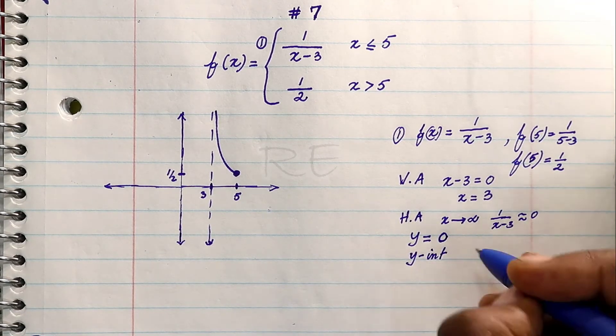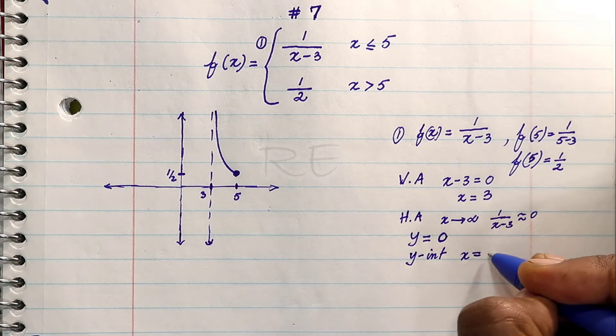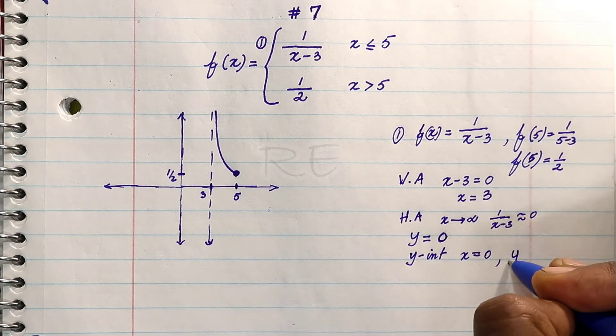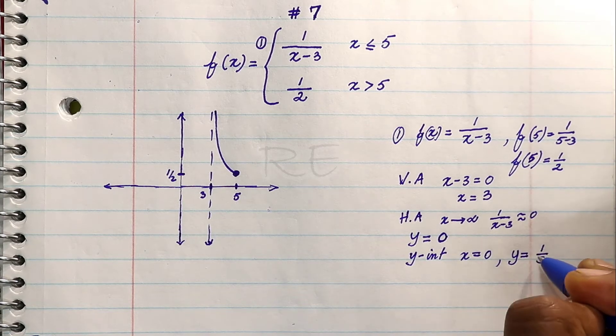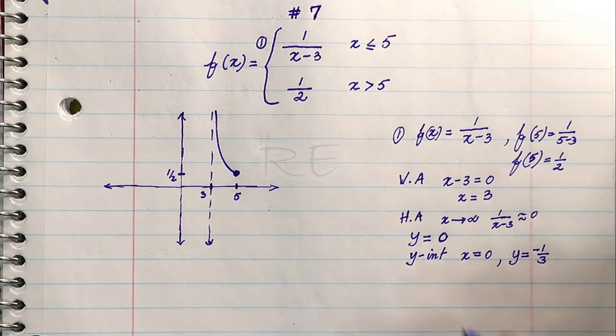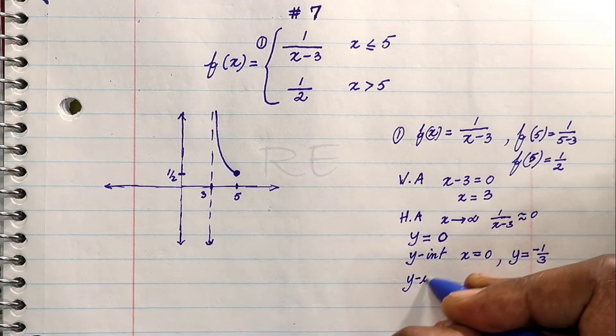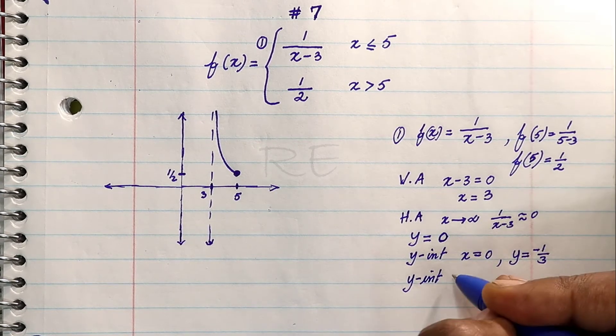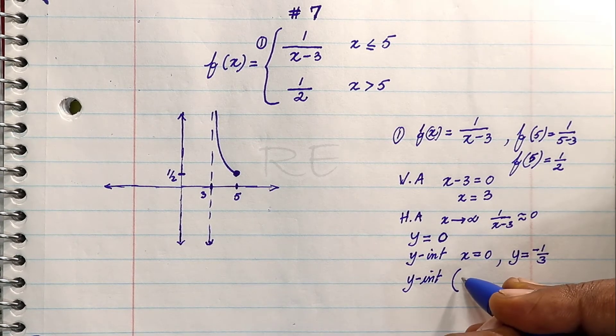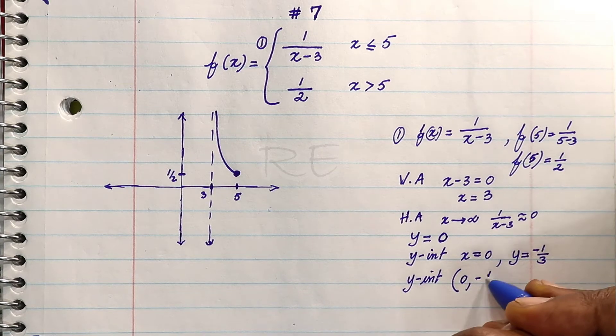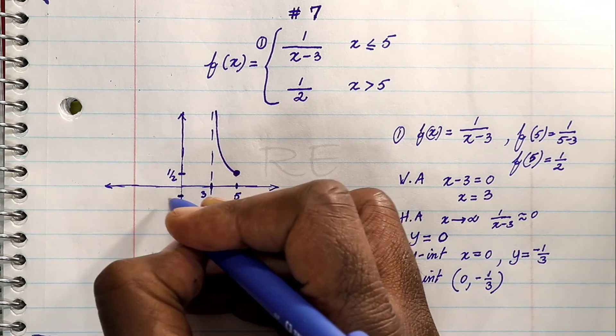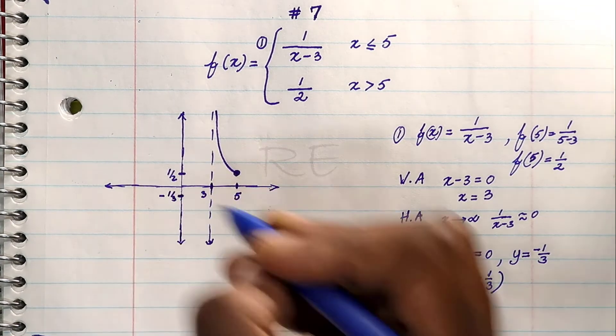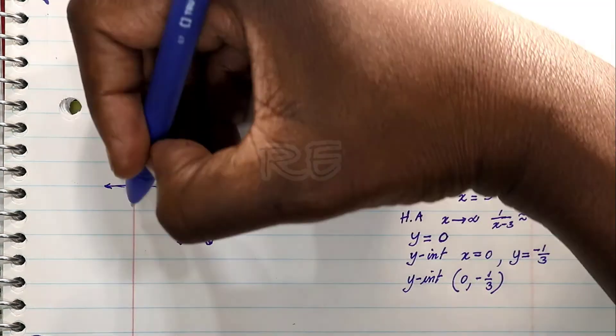For the y-intercept, x equals 0, y equals 1 over 0 minus 3, which is 1 over negative 3. So the y-intercept is (0, negative 1/3).